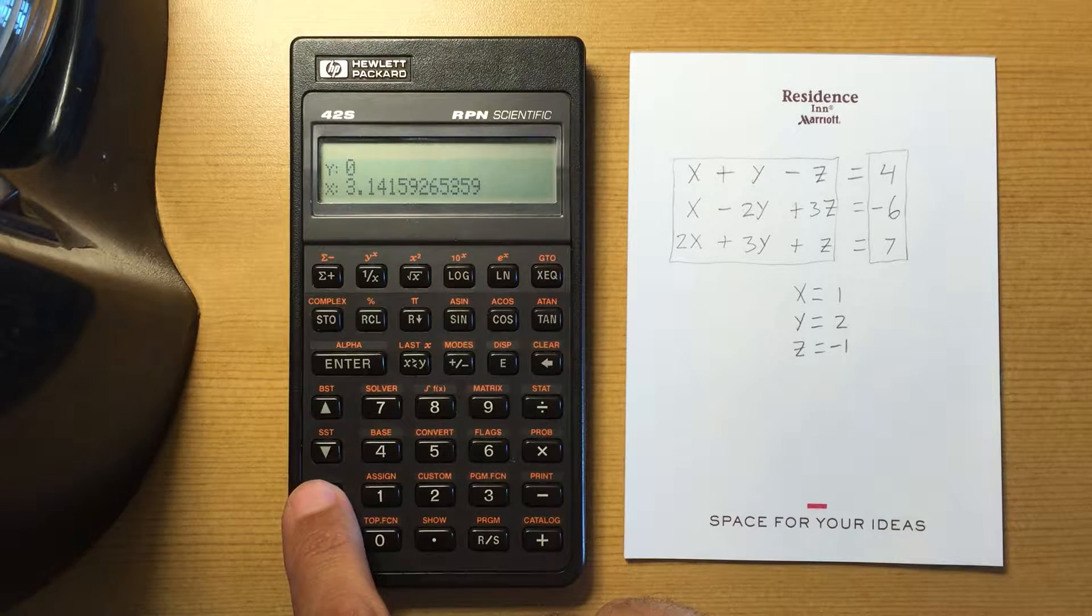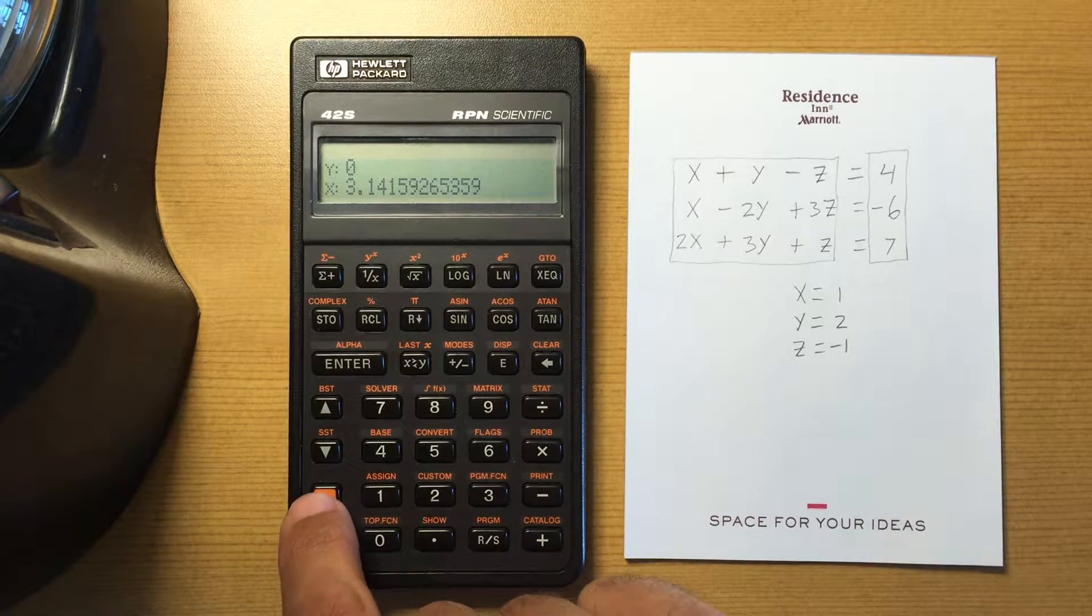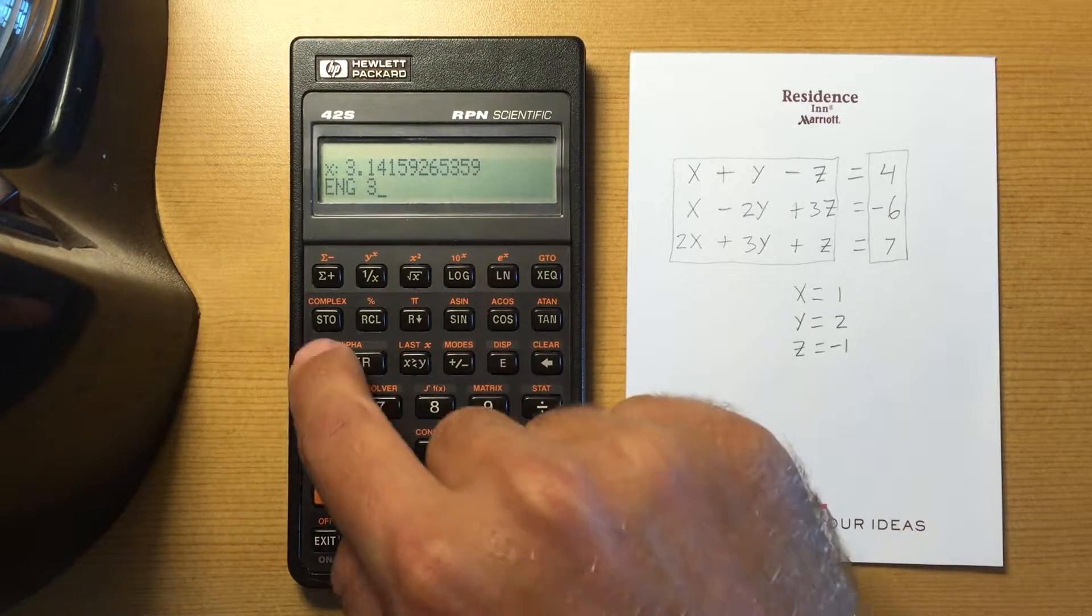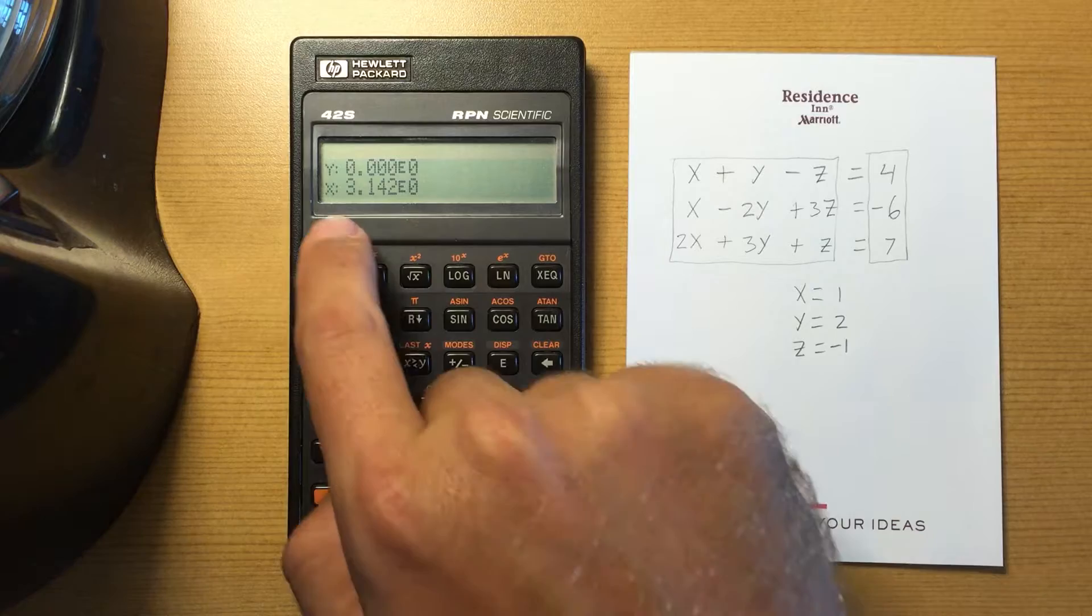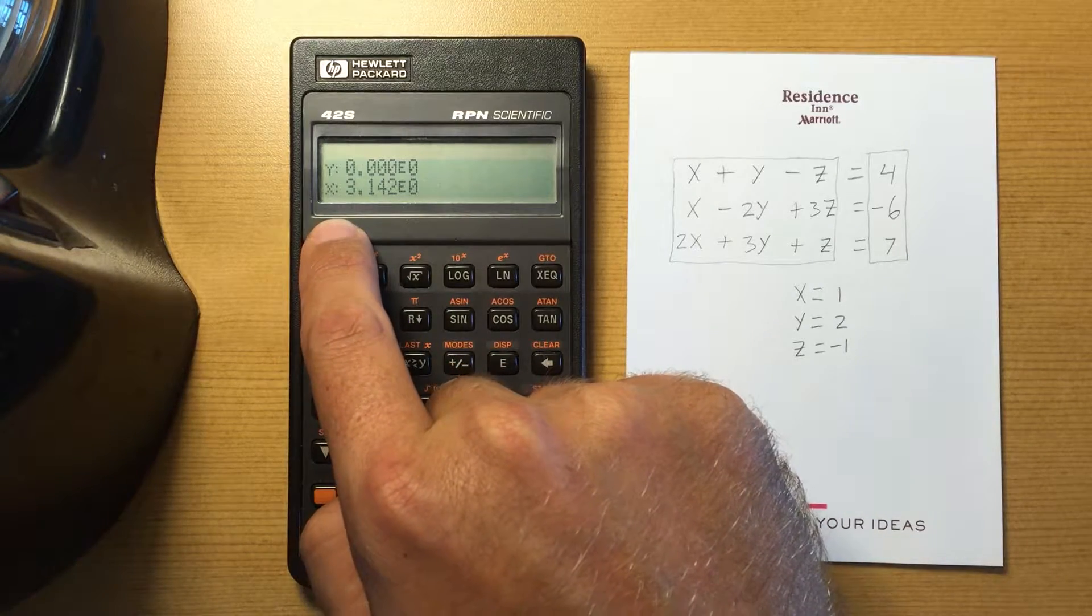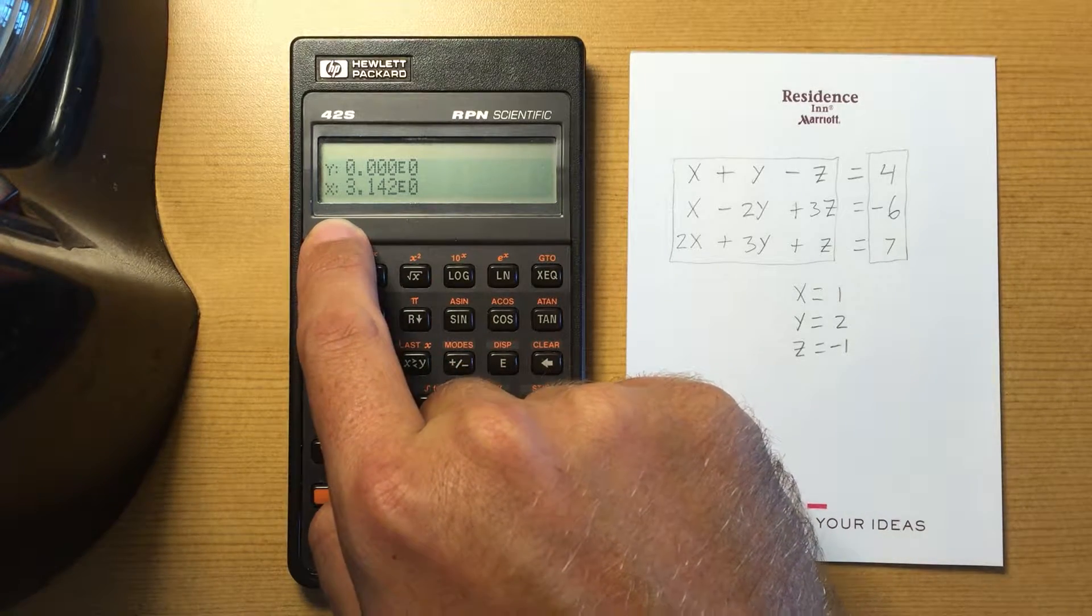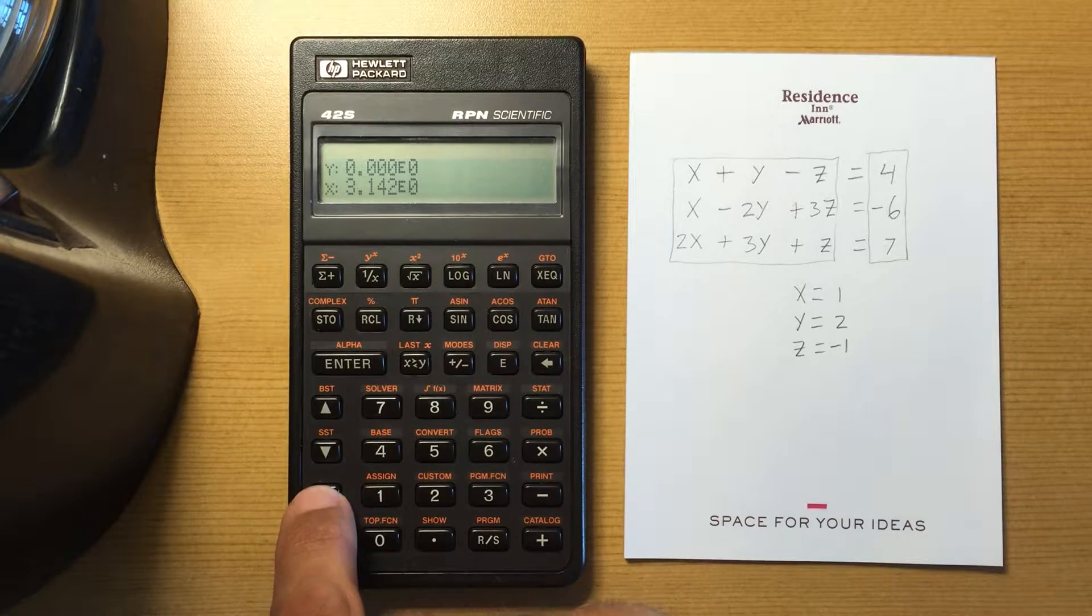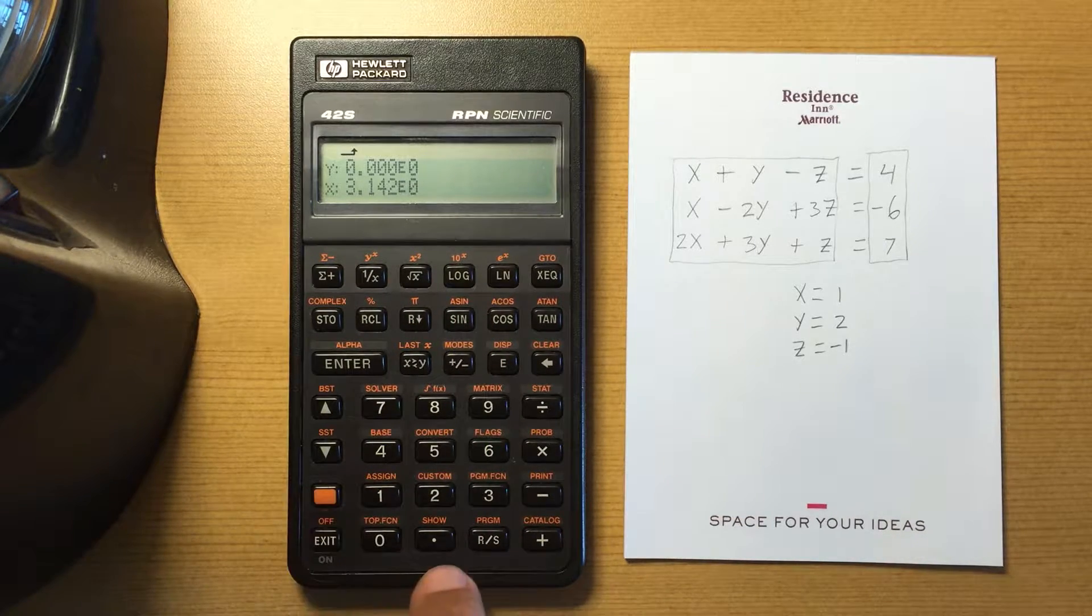Now one thing to note with any of these, so let's say I go to engineering and I typically do three decimal places. The calculator is storing a more accurate number than is actually displayed. And if I want to see the full number then I can use the function button and hit show.